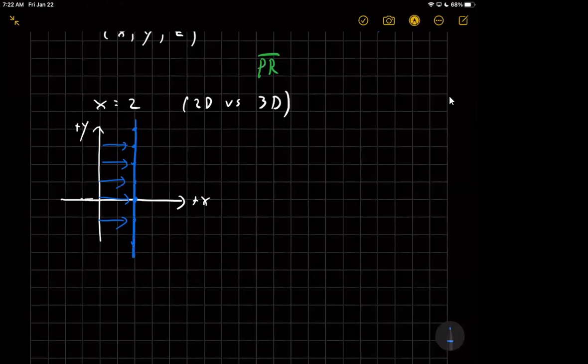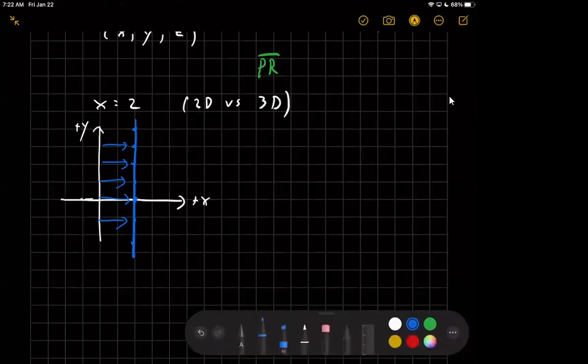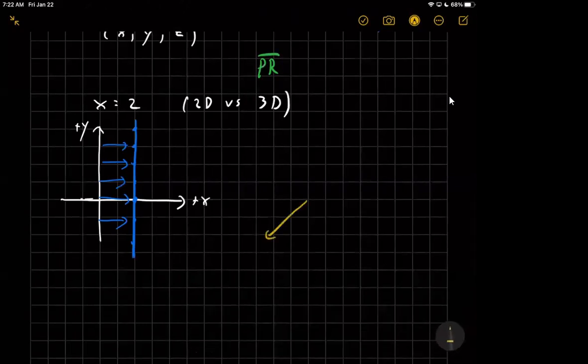But what does that look like in 3D? Well, in 3D, there would be a lot of points at x equal 2 that aren't just on a line. So that it would form a plane of points. So let me put my 3D axes in. So x is this way, y is that way, and z is this way, to give me a right-handed coordinate system, x, y, and z.